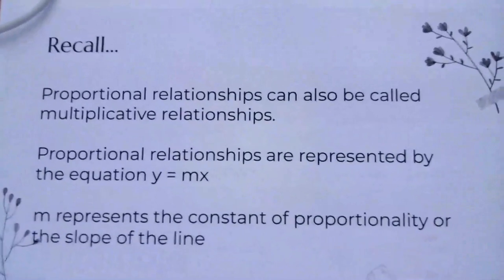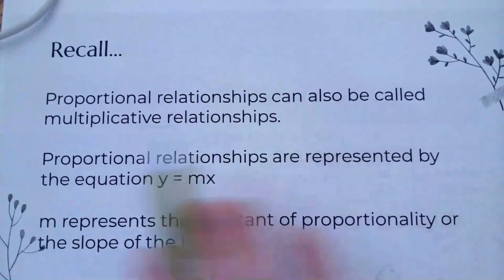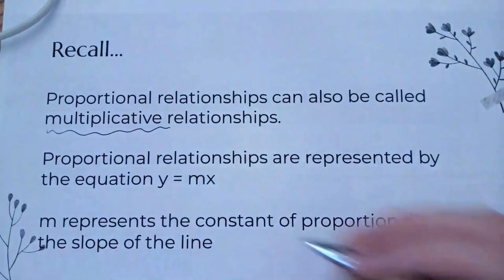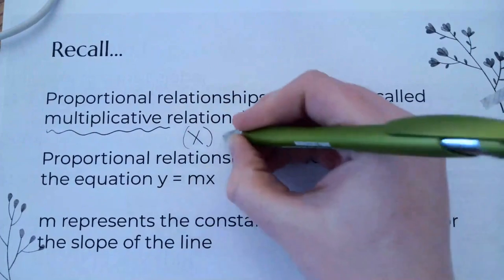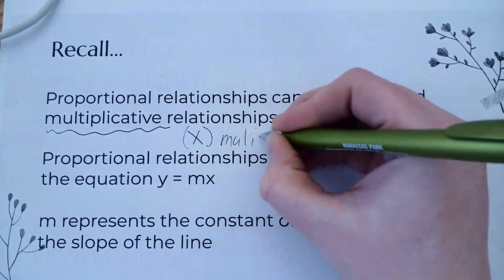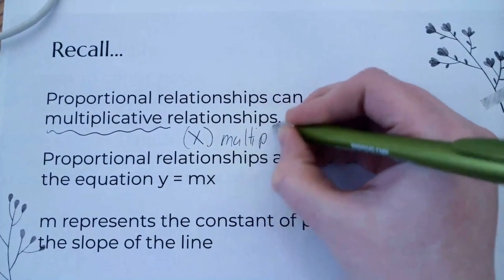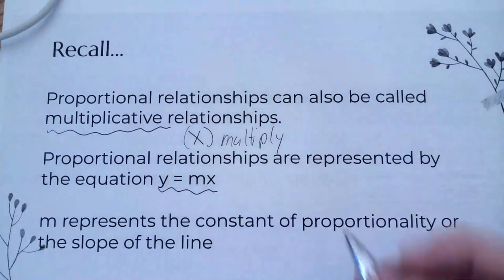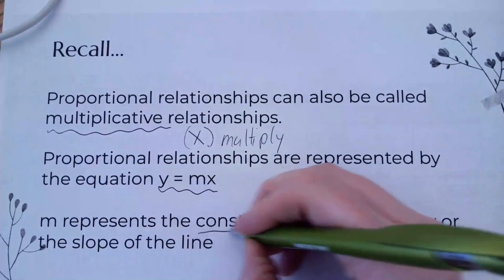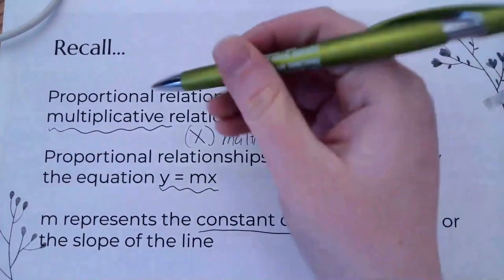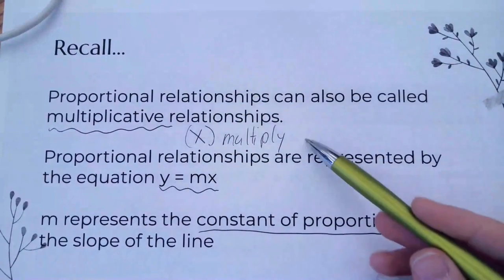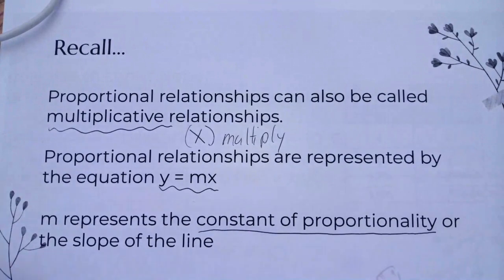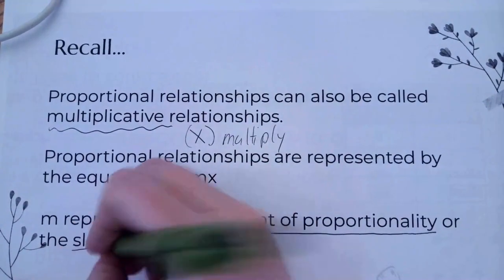The first thing you need to remember is that proportional relationships can also be called multiplicative. Multiplicative means you multiply. Proportional relationships are represented by y equals mx, and m is the constant of proportionality. You need to know these underlined words: multiplicative means multiply, y equals mx, and m is the constant of proportionality or the slope.